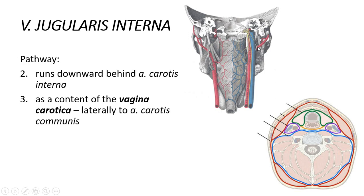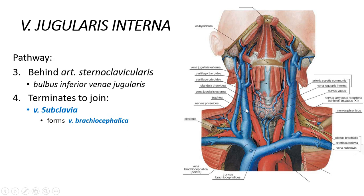At the very beginning the vein localizes behind the arteria carotis interna, then tends to go more laterally. Within the vagina carotica — the bundle of blood vessels and nerves — the vein is located more laterally from the arteria carotis communis. This is very important because when performing a puncture of the vena jugularis interna, we need to puncture the vein and not the artery, knowing it is located more laterally.